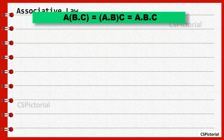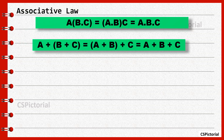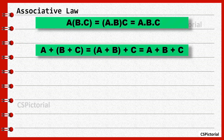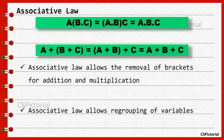Associative law. A times B dot C is equal to A dot B times C, which is again equal to A dot B dot C. Similarly, A plus B plus C is equal to A plus B plus C, which is again equal to A plus B plus C. The associative law allows the removal of brackets and regrouping of variables for Boolean addition and multiplication.